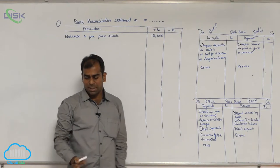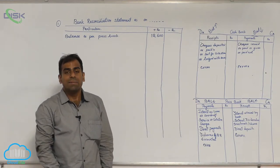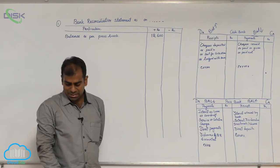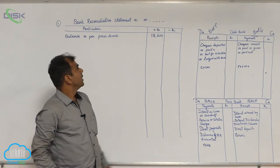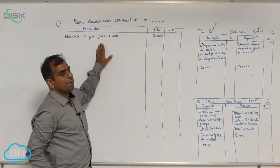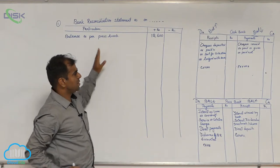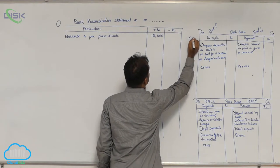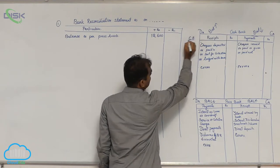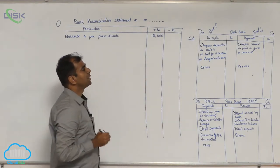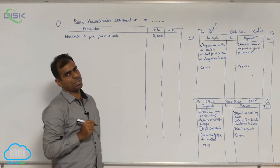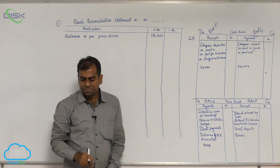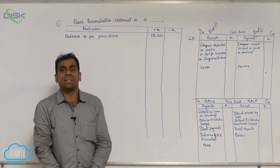Since you are given the pass book balance, remember you have to find out the cash book balance — that is your target. Write this down in a rough working note before proceeding to the individual transactions.